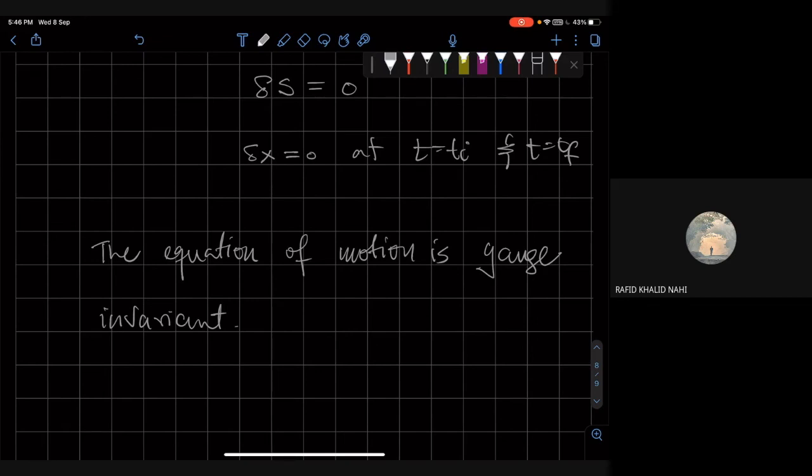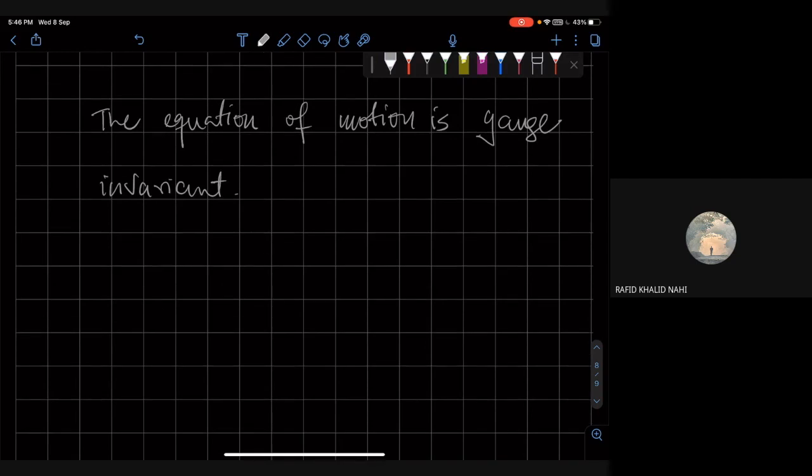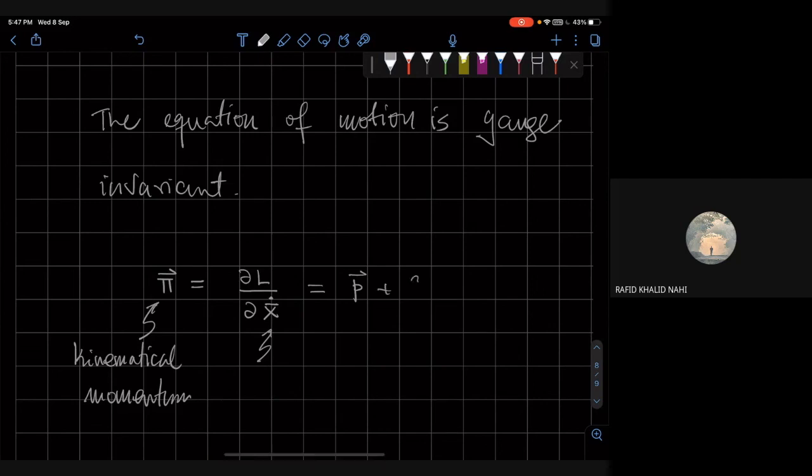So now that we have the Lagrangian, the Hamiltonian is just one step away. So for the Hamiltonian, we need to first define the momentum pi. And the momentum is the derivative of the Lagrangian with respect to x dot. I hope it's clear what I mean by taking the derivative with respect to a vector. And I mean that I'm taking like a component by component derivative. And if you do this, then the momentum, the kinetic momentum, this is called the kinematical momentum,